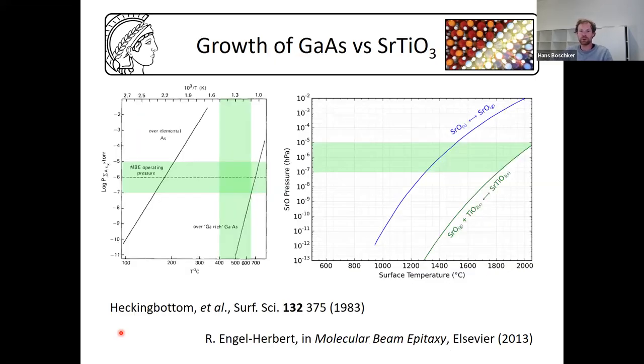Looking at composition control in thin film growth, it's always good to first look at gallium arsenide, where this has been achieved the best through absorption controlled growth. On the left here is the phase diagram of gallium arsenide, which has three regions. At low temperatures and high arsenic flux, arsenic sticks to the surface. At high temperatures and low pressures, arsenic evaporates and you're left with a gallium rich surface. But in between is where MBE growth of gallium arsenide operates.